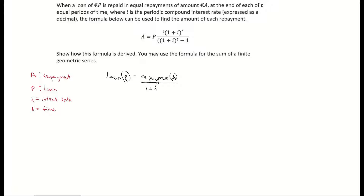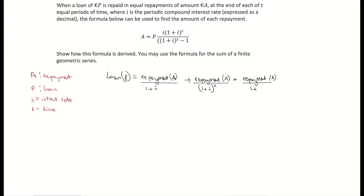I'm dividing A by 1 plus I, so 1 plus my interest rate. My next installment is going to be A divided by 1 plus I to the power of 2. And we continue that sequence on — so it's now going to be to the power of 1, then 2, then A over 1 plus I to the power of 3, and so on until my final repayment, which is to the power of T — some unknown year or month.